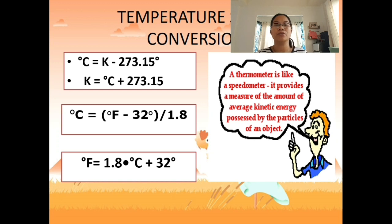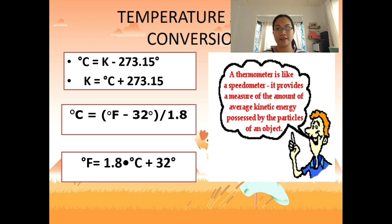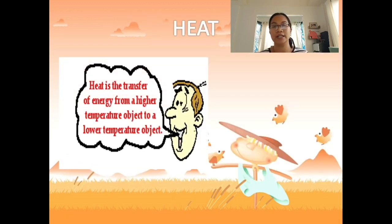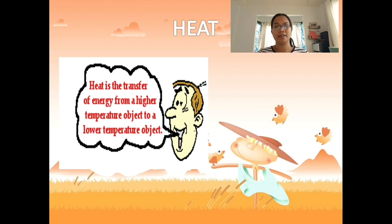Alternatively, you can use the 9/5 or 5/9 form. Degrees Fahrenheit equals (9/5) × °C + 32, and degrees Celsius equals (°F − 32) × (5/9). Sample problems for converting temperature will be shown later.